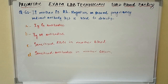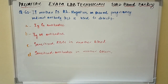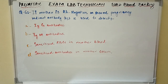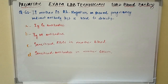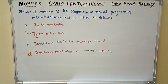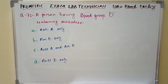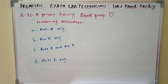Question number six: If mother is Rh negative in second pregnancy, indirect antibody test is used to detect — Option A: IgG antibodies. Option B: IgM antibodies. Option C: sensitized RBCs in mother's blood. Option D: sensitized antibodies in mother's serum.